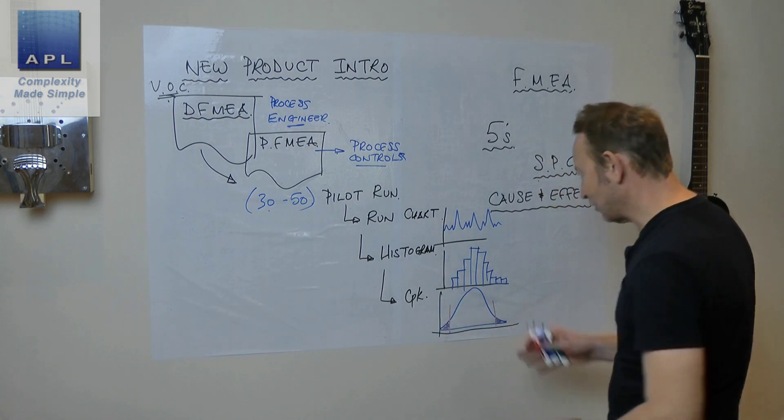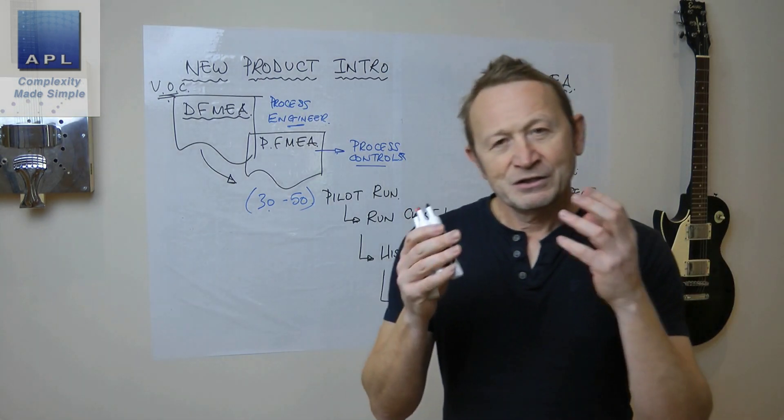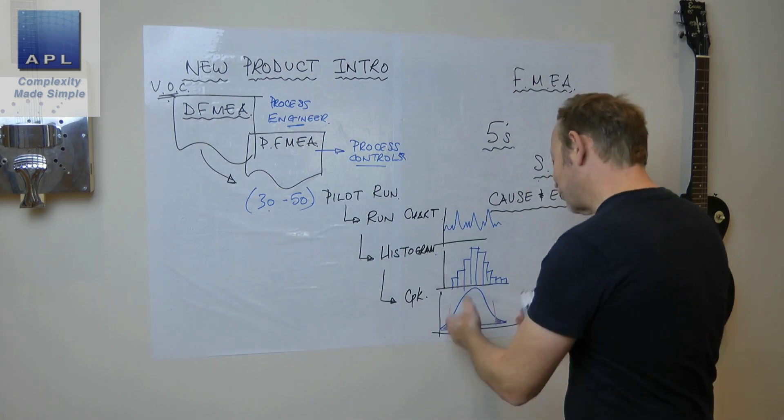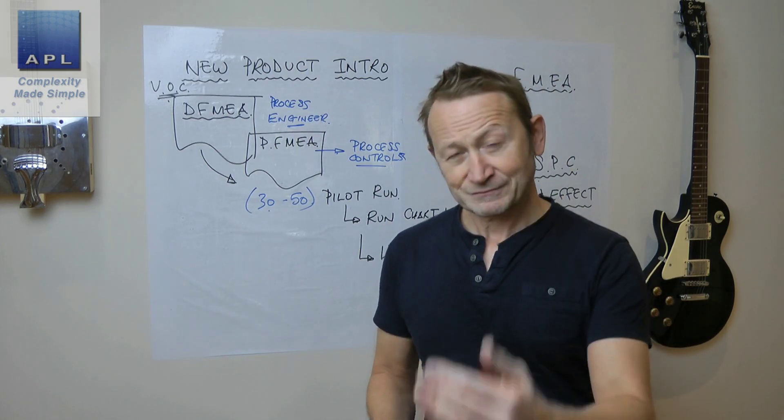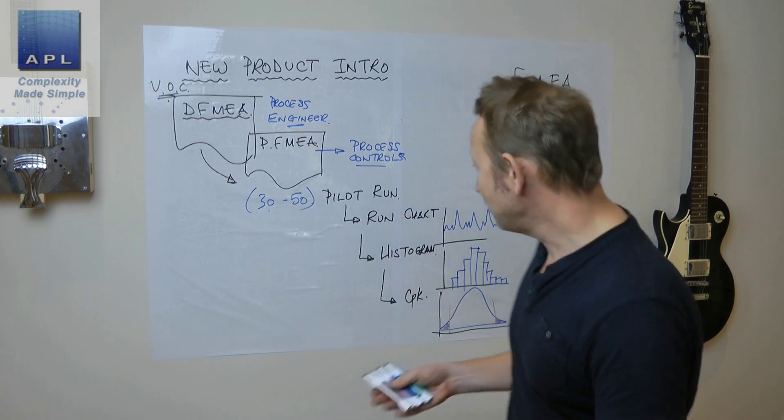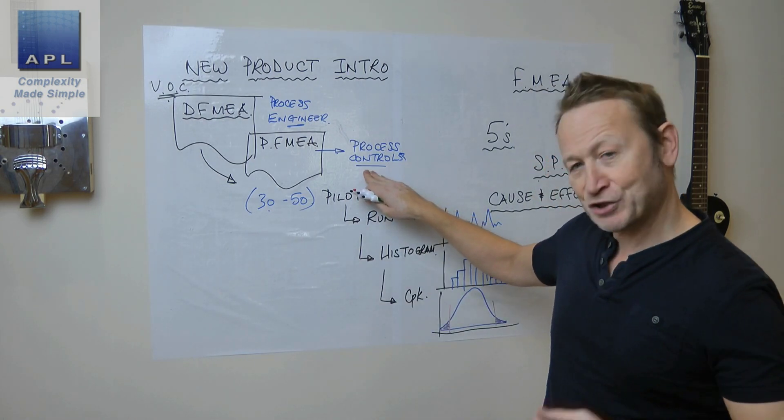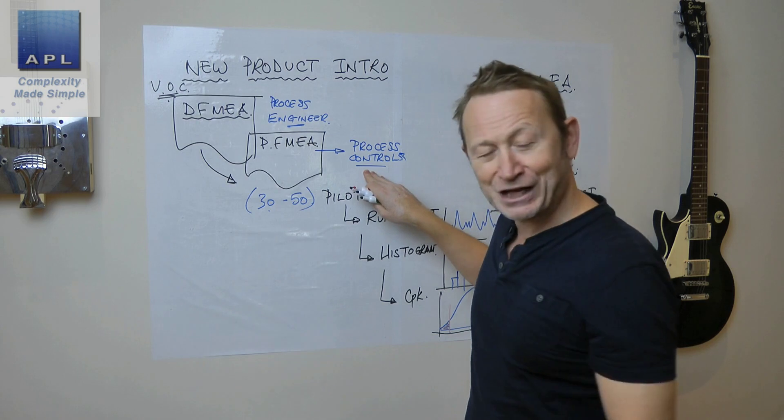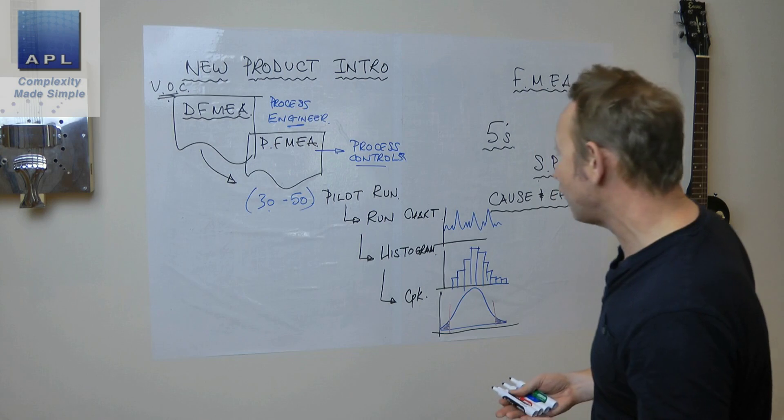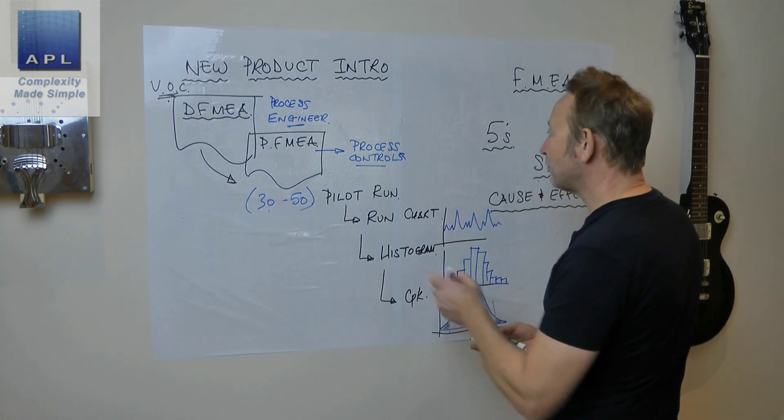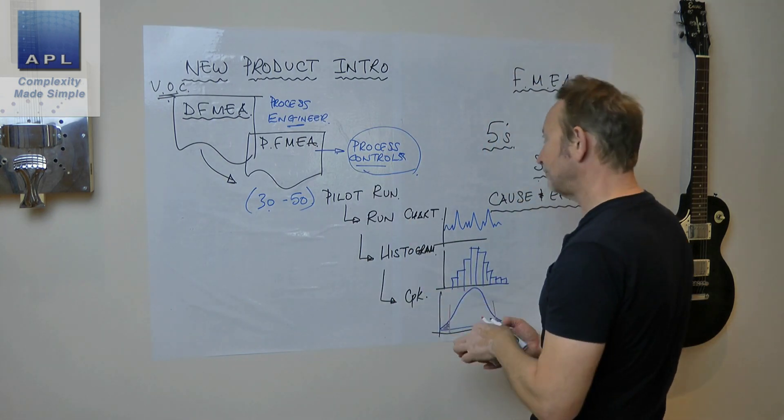Run chart, histogram, CPK. Once I've established that I have a capable process, now what I'm going to do is lock all of this good stuff in. I'm going to lock all my process controls in for the next five years. Out of the process controls here, where are we going?